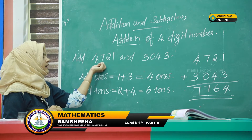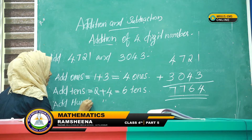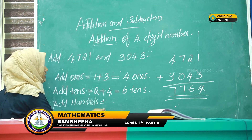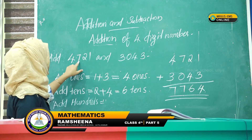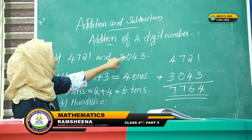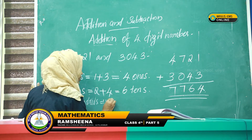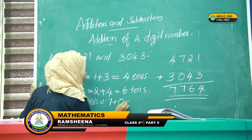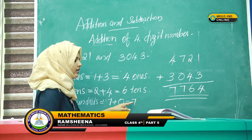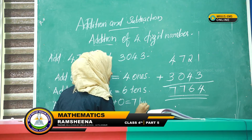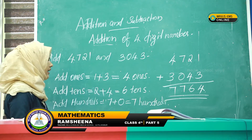Next we add hundreds. Which number stands in the hundreds place? The number 7 and 0. 7 plus 0 is equal to 7. That is 7 hundreds.